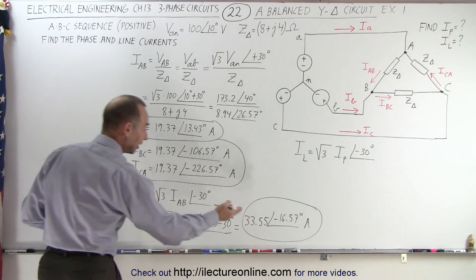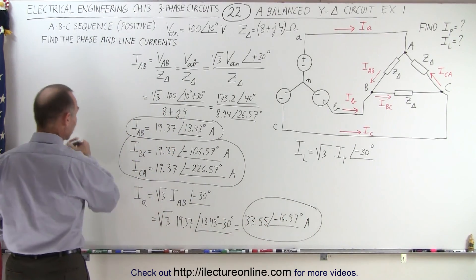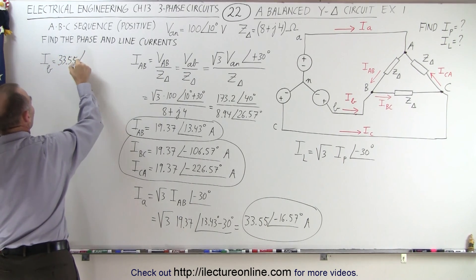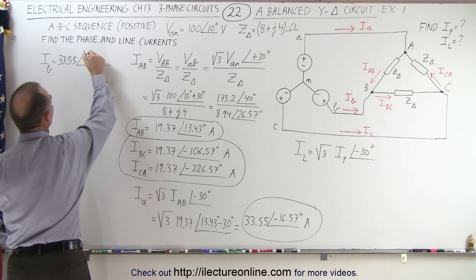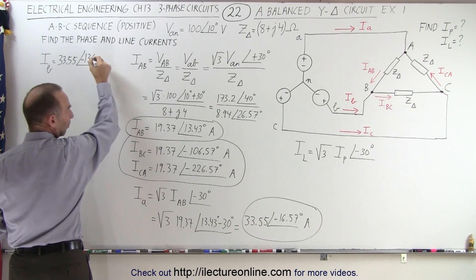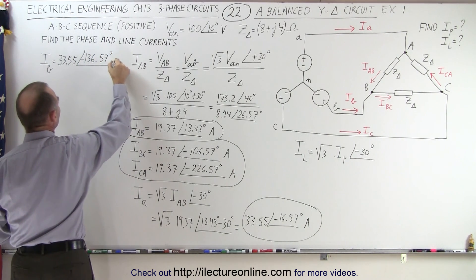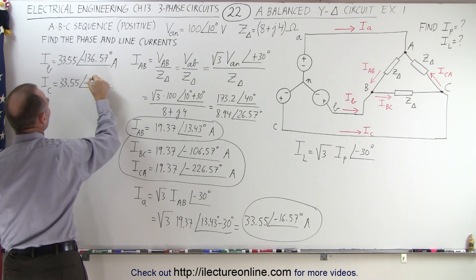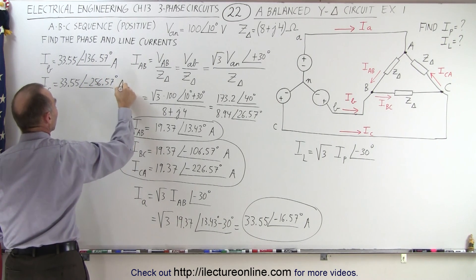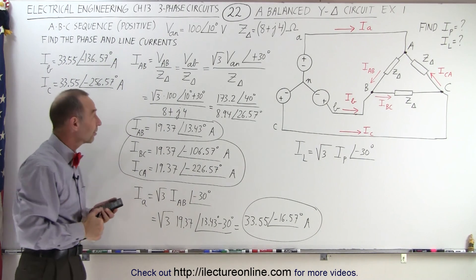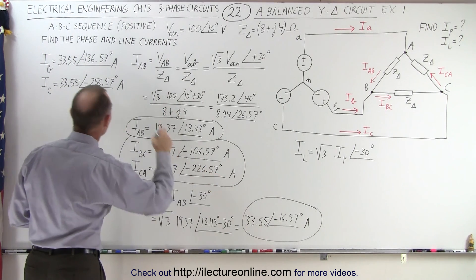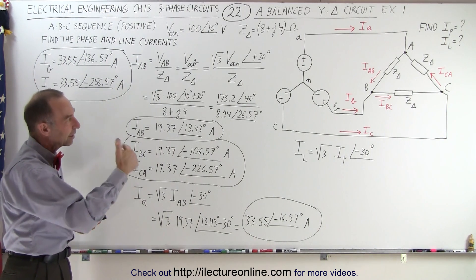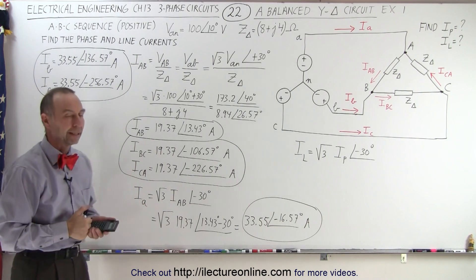To find the other two line currents, we take the same magnitude but shift the phase angle by negative 120 degrees. So IB equals 33.55 amps at minus 136.57 degrees, and IC equals 33.55 amps at minus 256.57 degrees — which we could convert to a positive angle by adding 360 degrees. Those are the three phase currents and the three line currents for this circuit, and that's a good starting exercise for calculating line and phase currents in a Y-delta circuit.